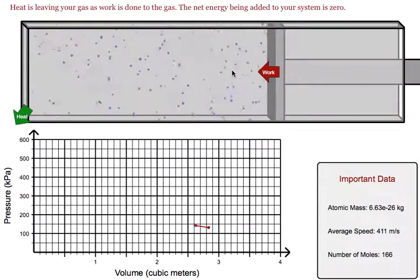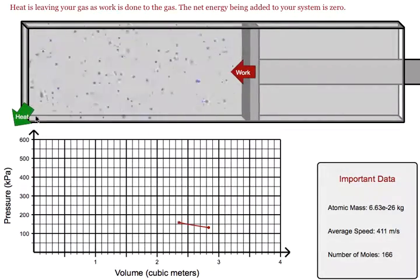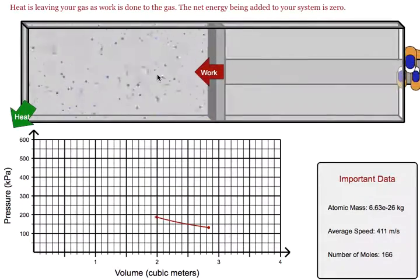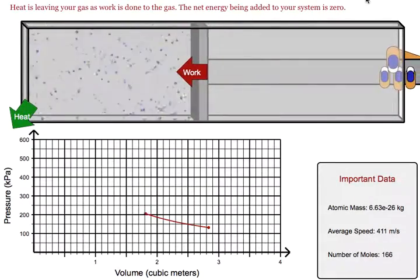So when we click on this, we are doing work to our system, but at the same time, heat is leaving our system. The total internal energy inside the box remains constant.